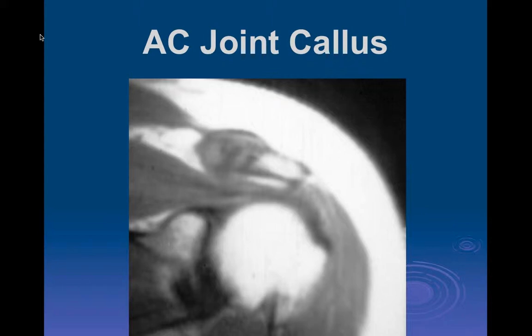We talked about one form of impingement last time - osteophytic changes of the acromioclavicular joint and how the bone could impinge. We also talked about the shapes of the acromion. Staying on the AC joint, this was an old scan from probably the early 1990s. What we can see here is this is not so much an osteophyte - this is callus formation due to degenerative disease at the acromioclavicular joint.